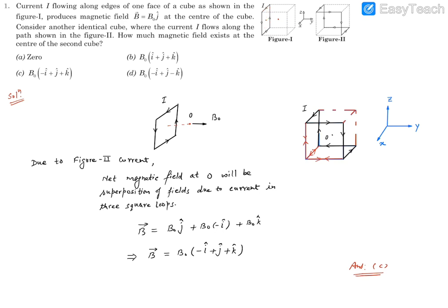The same thing has been drawn here separately. So if current flows on a square loop, then at the distance, you can say half of the edge of this loop, and at the center point, it is going to be B0 and perpendicular to the loop. Now we know this point and we are going to use this point to find out the magnetic field at the center of this cube, figure 2.